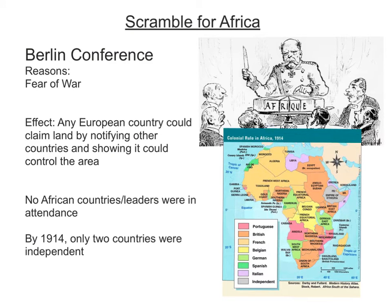The European colonization of Africa was known as the Scramble for Africa. Early on, Europeans realized they needed to sit down and establish rules to avoid war with each other. This conference was called the Berlin Conference. What they decided was that any European country could claim land by notifying other countries and showing it could control the area — they established rules for claiming colonies or territories in Africa, but did not divide up the land at that meeting. No African countries or leaders were in attendance. By 1914, only two countries were still independent: Liberia and Ethiopia.